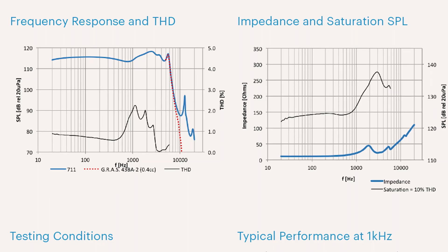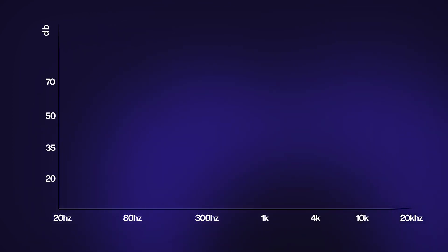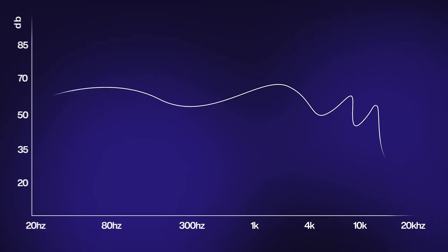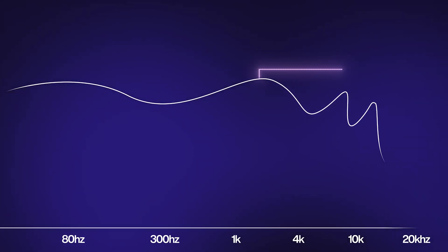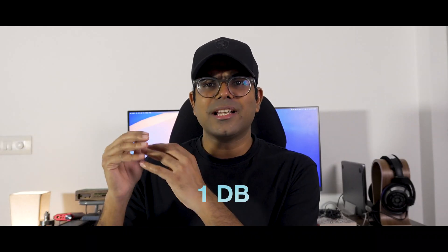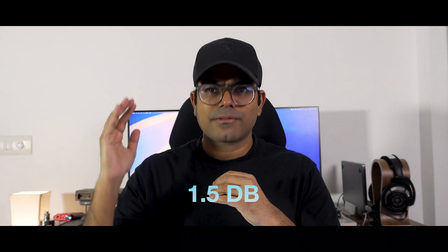Take the example of the Knowles balanced armature driver BK 26824000. The rated impedance of the driver is 22 ohms; however, if you look at the impedance graph there are various peaks around 2kHz, 5kHz and onwards. So if you use this driver in an IEM and connect it to an amp that has a slightly higher impedance, it will directly affect not across the full range but specifically those 2k and 5k peaks and beyond — causing slight elevation or difference in flavor in that region.